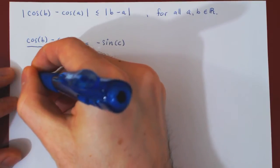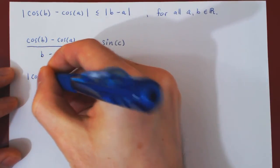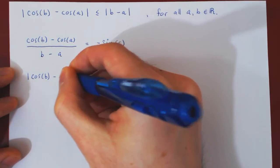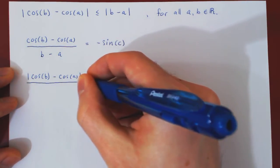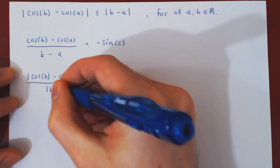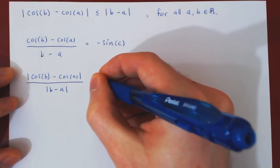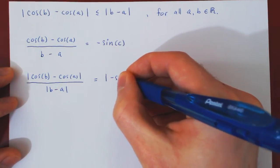So the absolute value of cosine of b minus cosine of a over the absolute value of b minus a, taking the absolute value on the left must equal taking the absolute value on the right.